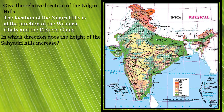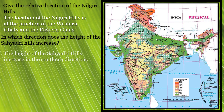Next question: in which direction does the height of the Sayyadri hills increase? Looking at the Sayyadri hills, the southern area is darker in color — dark brown. So the height of the Sayyadri hills increases in the southern direction because it is darker in the southern area.